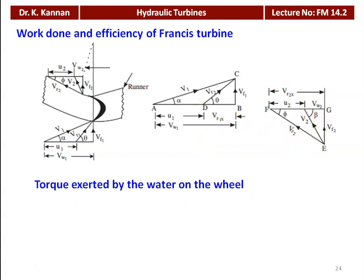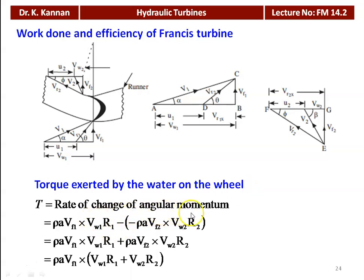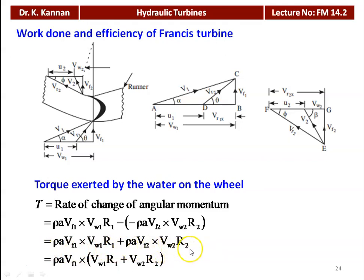The torque exerted by the water on the wheel equals the rate of change of angular momentum. The torque equals rho·A·Vf1·(Vw1·r1 − Vw2·r2). With a minus sign because Vw2 is in the opposite direction to the runner rotation, it becomes rho·A·Vf1·(Vw1·r1 + Vw2·r2). Since flow velocity is constant between inlet and outlet (Vf1 = Vf2), the torque becomes rho·A·Vf1·(Vw1·r1 + Vw2·r2).